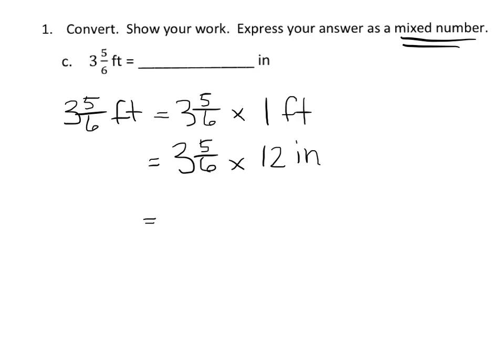So we've got 23-sixths times 12. And so that means we've got 23 times 12 over 6. And as we've learned before, the 12 and the 6 have a common factor. It's 6. So 12 divided by 6 is 2, and 6 divided by 6 is 1. So we end up with the answer of 46 inches.